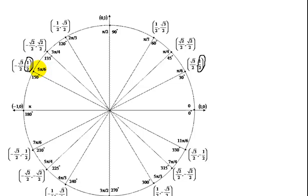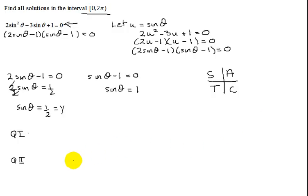The other one said the sine of theta was equal to 1. So I need to find a y value equaling 1 and it's on one of the axes, and here it is on the positive y-axis at π/2.